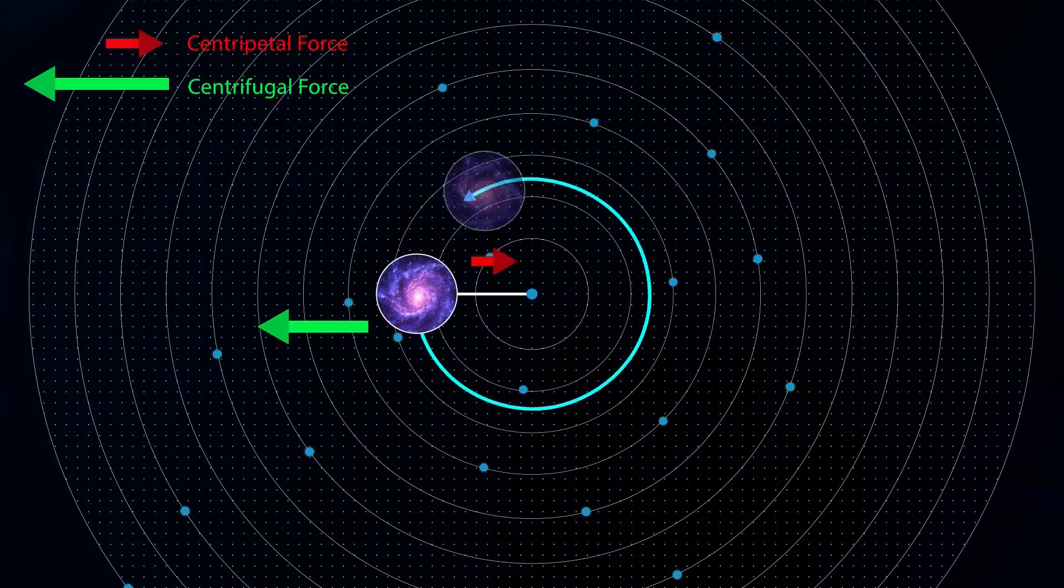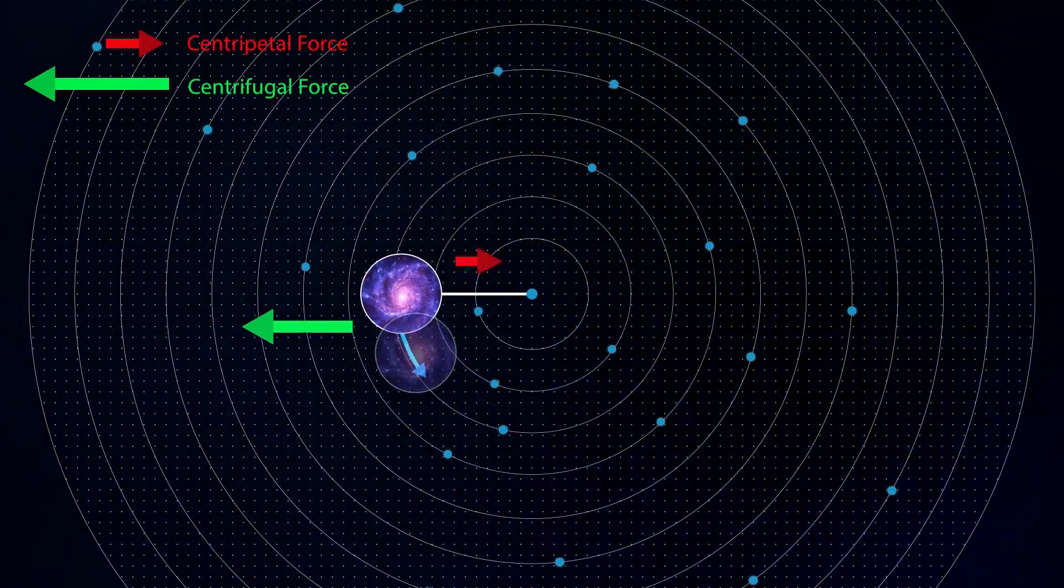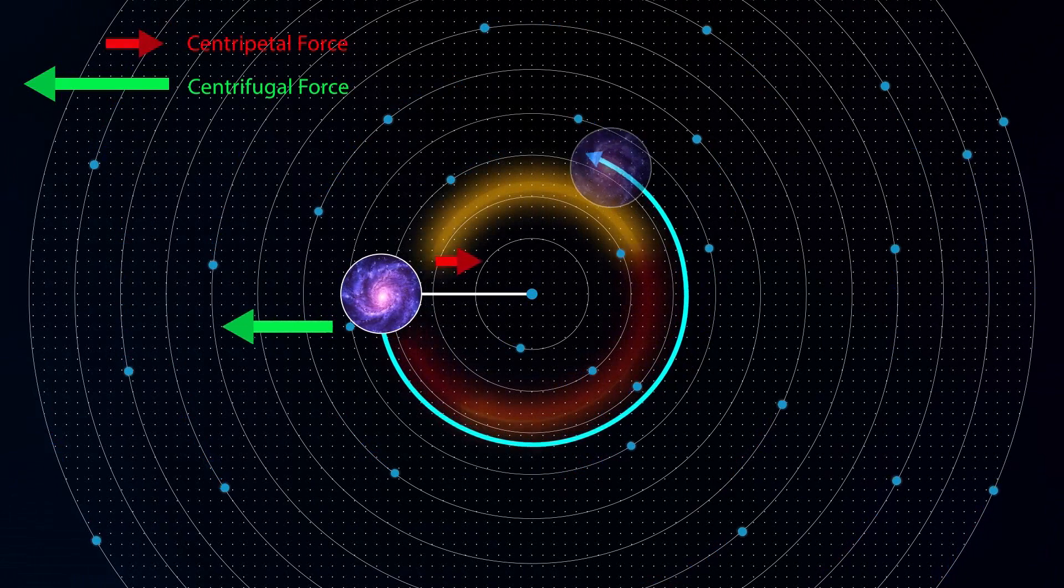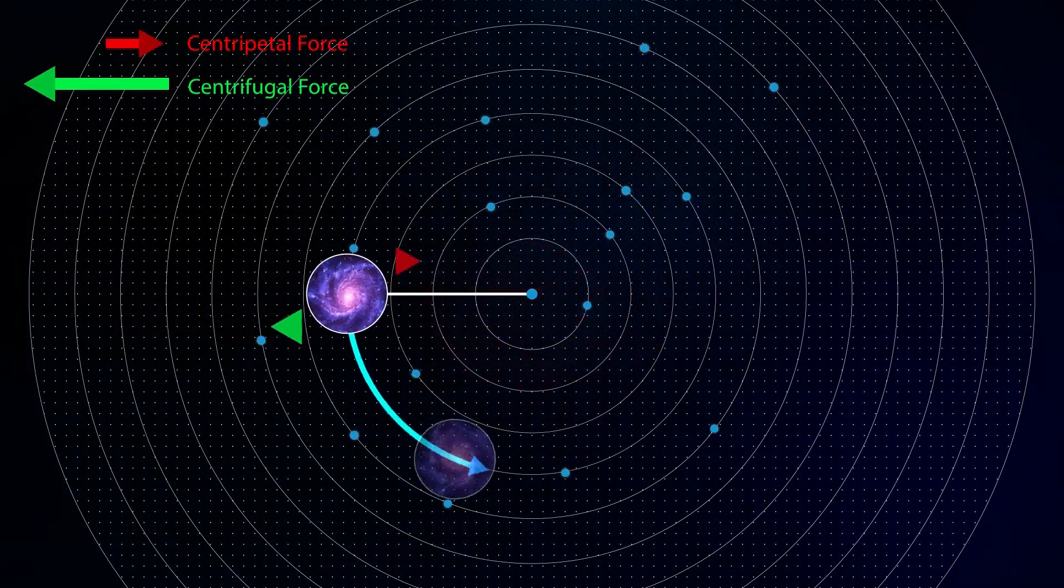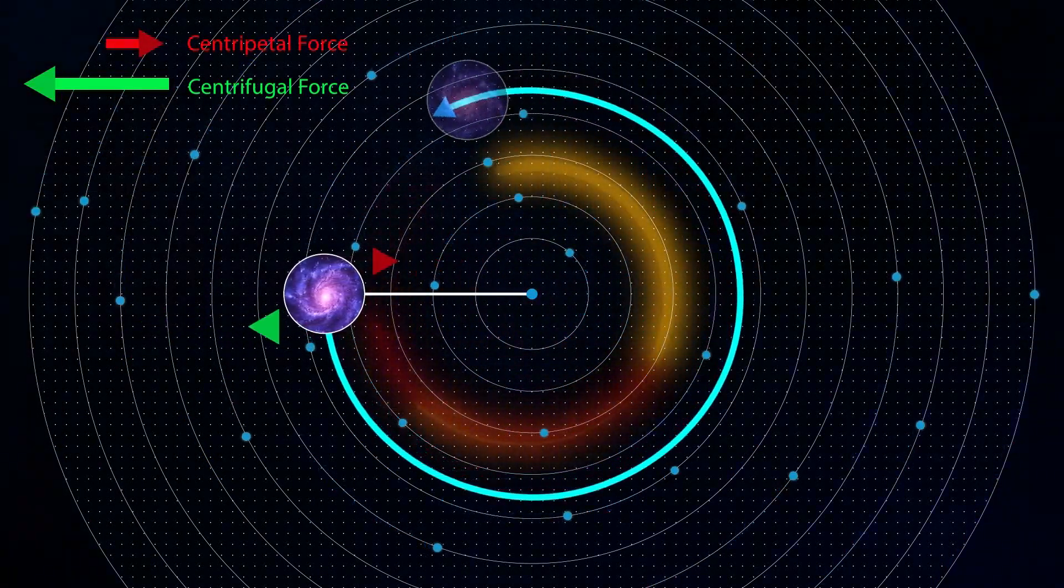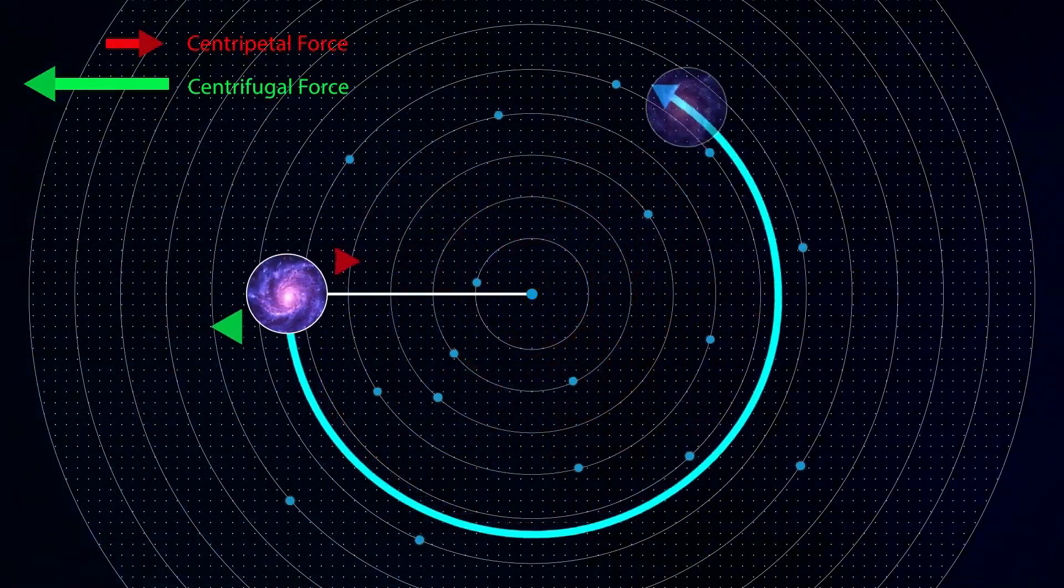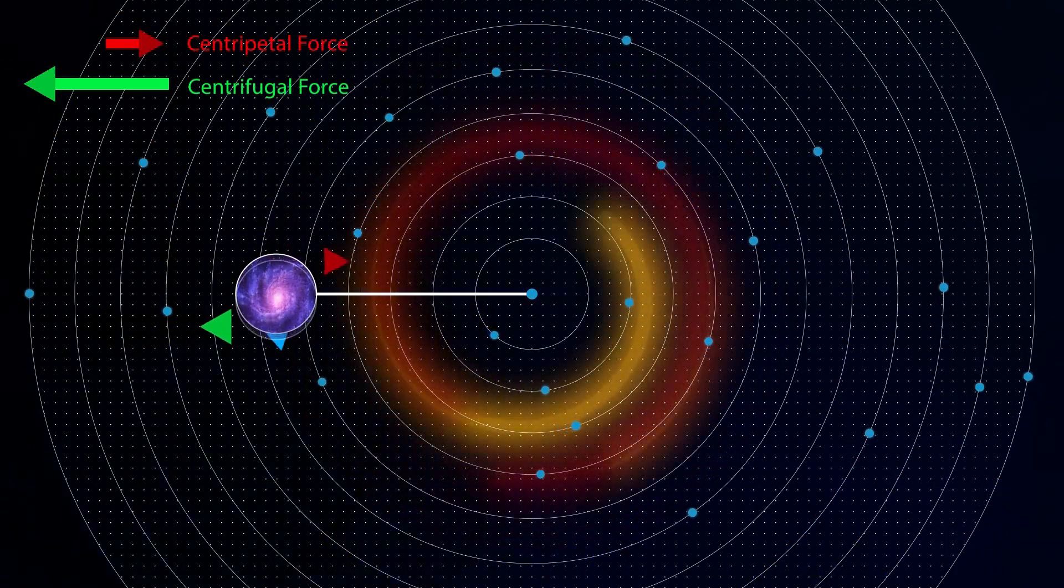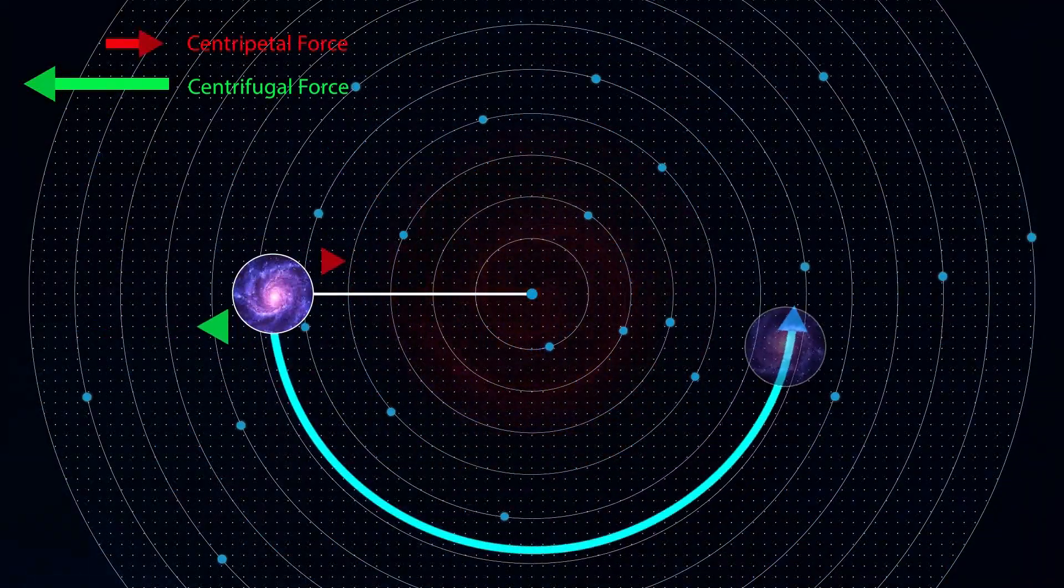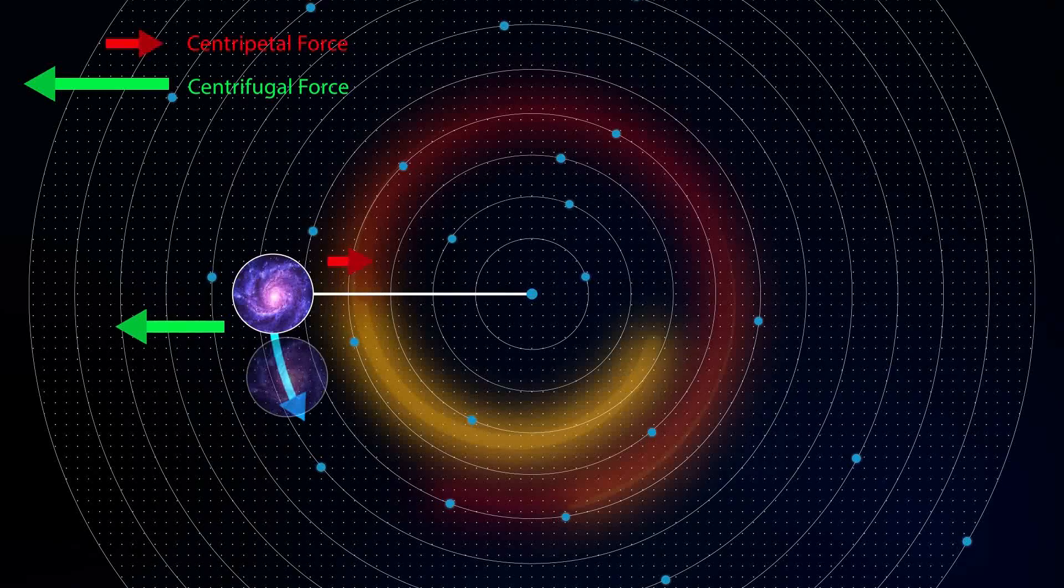That this universe is rotating with such a very very high velocity. And as a result of this velocity and rotation, a spiral centripetal force is created. And all parts of this world are affected by it, which is the beginning of the creation of black holes and galaxies.